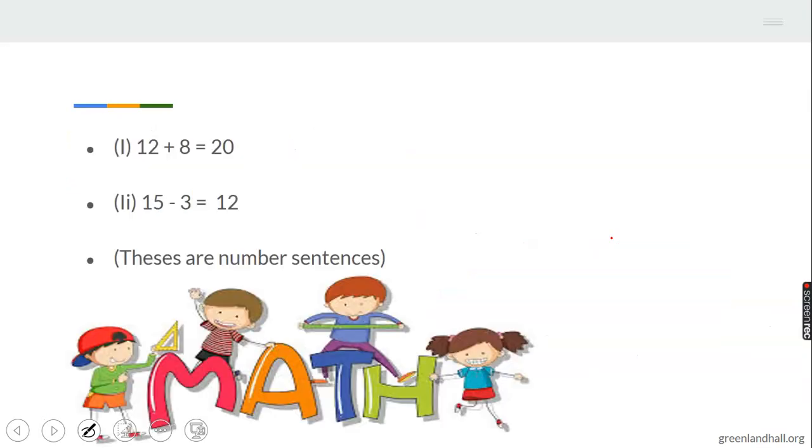The number sentence, if you see one, this is it: we have 12 plus 8 that equals 20, and 15 minus 3 that will give us 12. Now these two here are what we call number sentences in math.